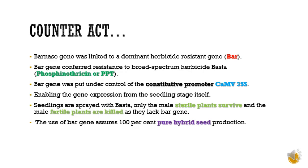The first strategy is that the Barnase gene is linked with a dominant herbicide resistant gene called Bar, which confers resistance to a broad spectrum herbicide known as phosphinothricin. This Bar gene is put under the control of a constitutive promoter called CaMV35S, that is Cauliflower Mosaic Virus 35S. This promoter is unregulated and facilitates continuous transcription of its associated gene. The Bar gene gets expressed from the seedling stage. When seedlings are sprayed with Basta — that is phosphinothricin — all the male sterile plants survive and the male fertile plants are killed since they lack the Bar gene. By using this Bar gene, it achieves 100% pure hybrid seed production.